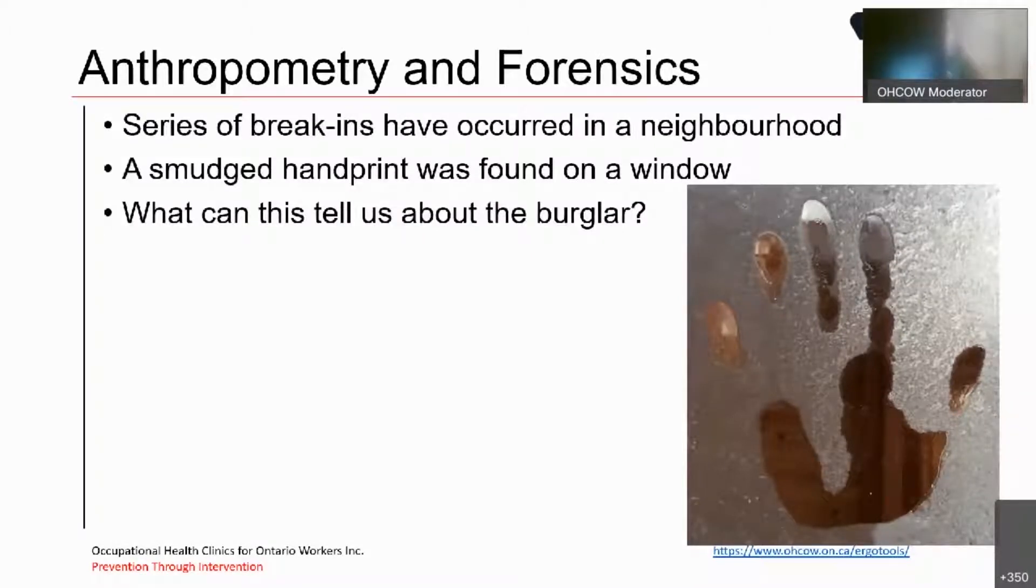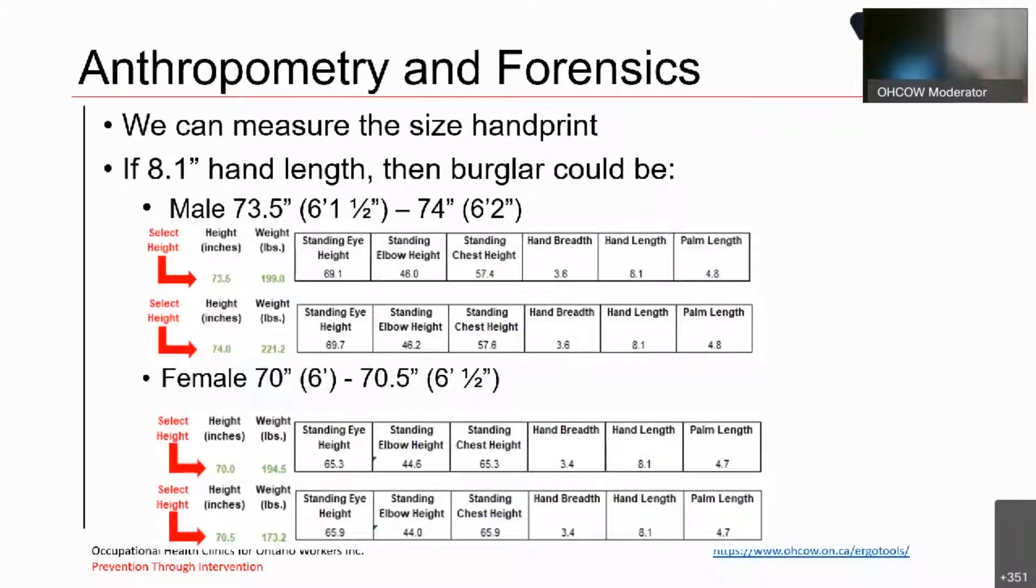With respect to anthropometrics and forensics, let's say there's been a series of break-ins that have occurred in a neighborhood, and a smudged footprint or handprint was found on a window. What can this tell us about the burglar? Well, we can actually measure the length of the hand. We can then go to the table, and the hand itself was 8.1 inches. This would mean if we actually started playing with the heights and found the hand length of 8.1 inches, it would tell us that the burglar could be a male who is 73.5 inches to 74 inches, or a female, that's 70 inches to 70.5 inches.